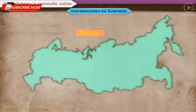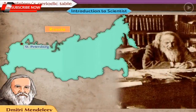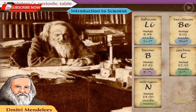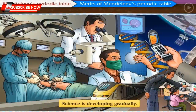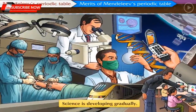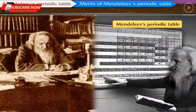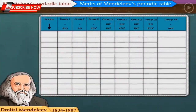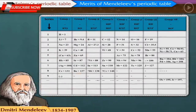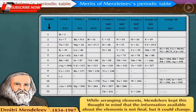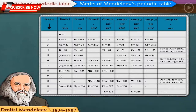Dmitri Mendeleev was a professor at St. Petersburg University during the period 1834 to 1907. He made separate cards for every known element, showing its atomic mass and properties. Merits of Mendeleev's Periodic Table: Science has the freedom to revise old conclusions using advanced techniques and experiments. These characteristics of science are clearly visible in Mendeleev's periodic table. Mendeleev arranged elements based on the periodic law, keeping in mind that the information available about elements is not final and could change.